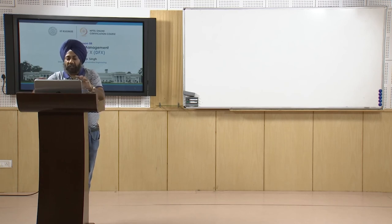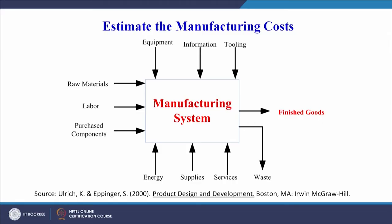This slide shows an overview of what a manufacturing system is made up of. Our target is finished goods. The various inputs include raw materials, labor, purchased components for subassemblies, equipment, information, tooling, energy, supplies, and services. Sometimes there are rejected parts that go as waste. We have to focus on each and every element of this system in order to overall optimize the manufacturing process.